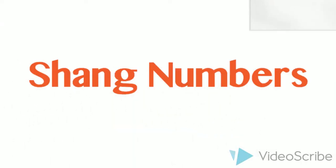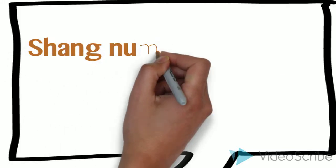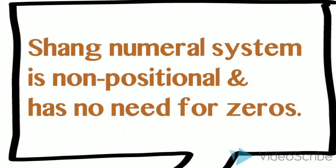The Shang number system was used from the 14th century BC. Since there exists a symbol for each number, it is non-positional and has no need for zero.